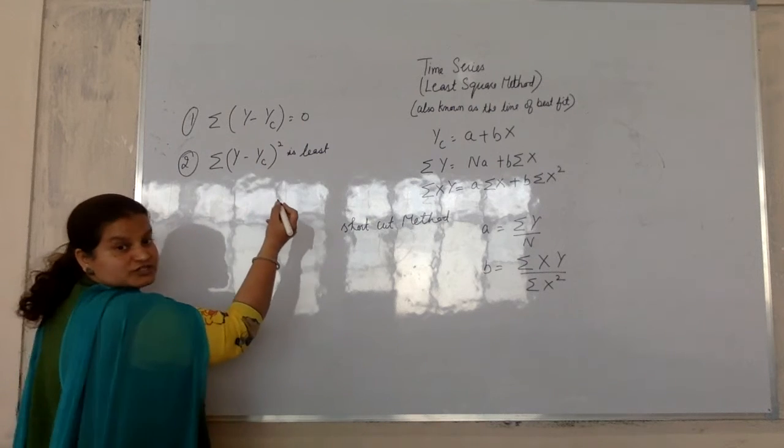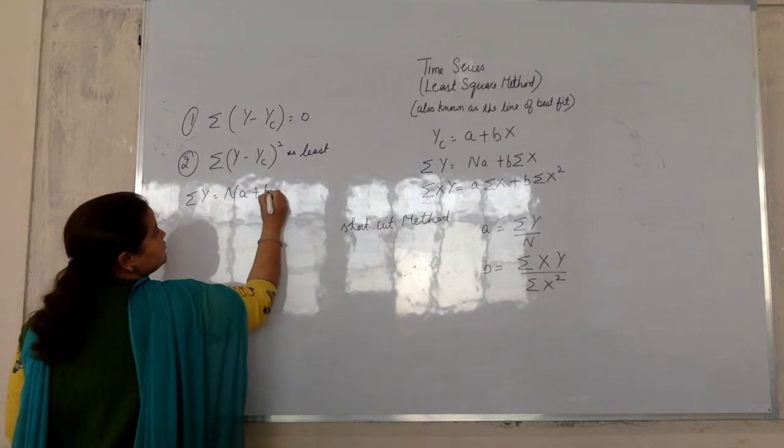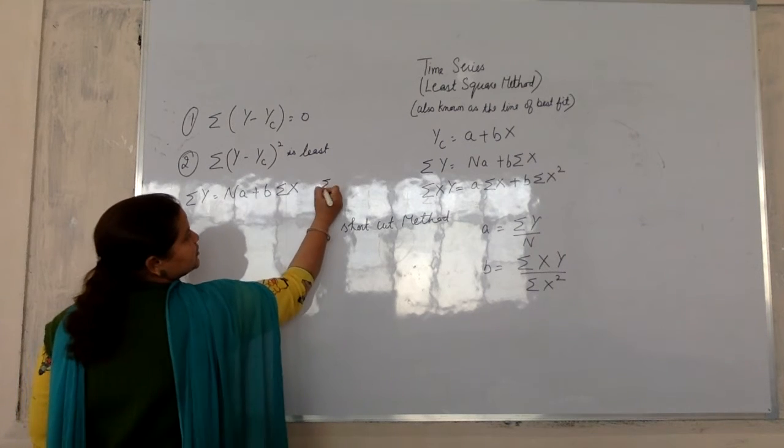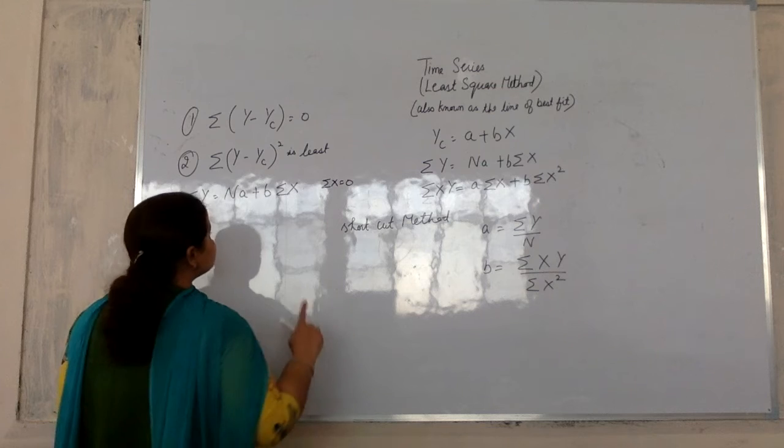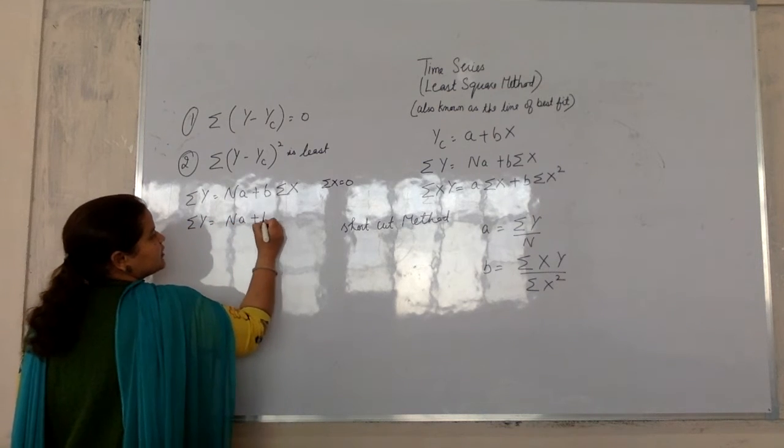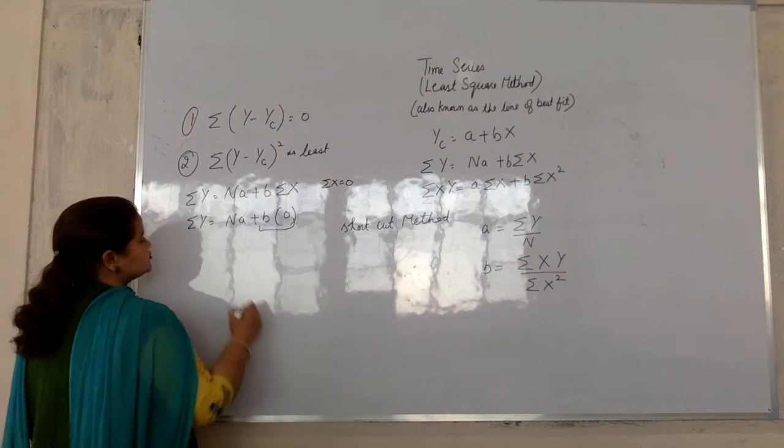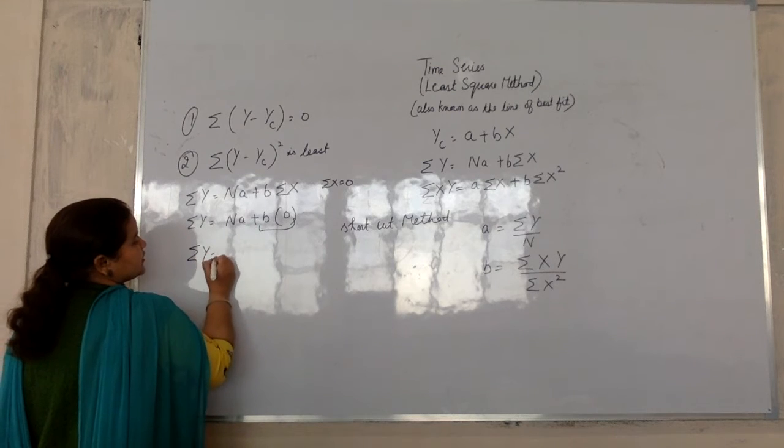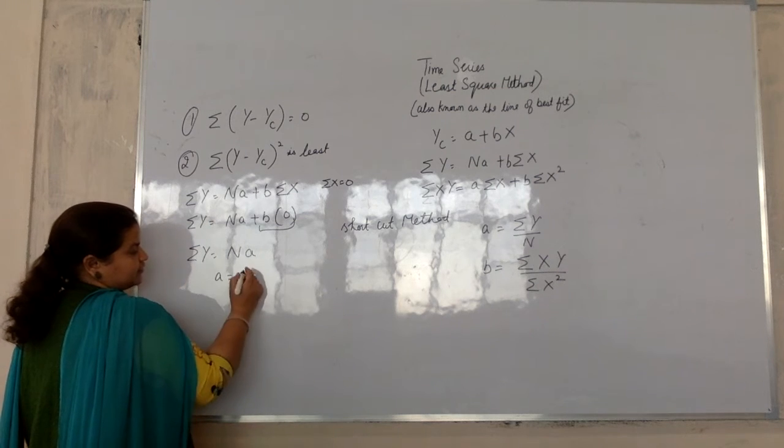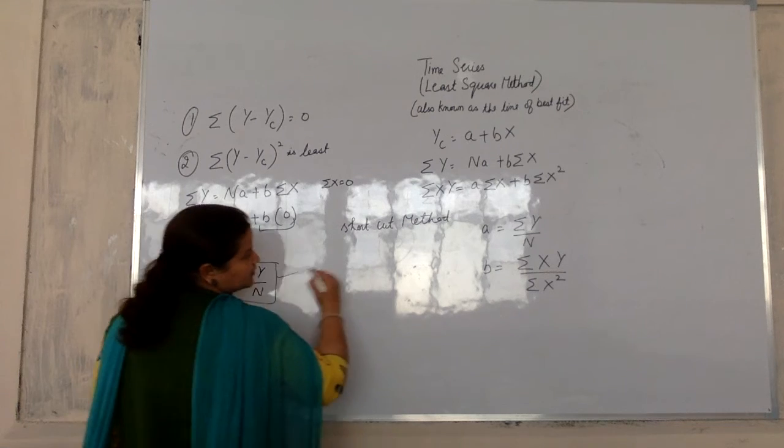We have two equations. We have said summation y is equal to n a plus b summation x. Now I have said shortcut method where summation x is zero. If summation x is zero, it means summation y is equal to n a plus b into zero. So naturally this value is zero. So summation y equals n a. And to find a value, we divide: summation y over n. This is the shortcut method formula.